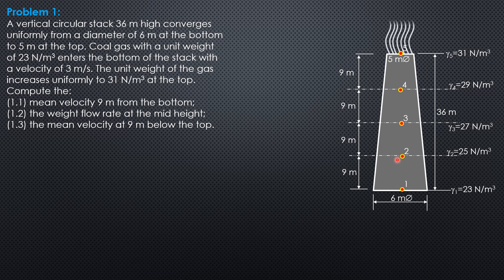The diameter at section 2 should be 5.75 meters, since the total change from 6 to 5 is 1 meter divided by 4 increments, giving 0.25 meters per section. The diameter at the mid-section is 5.5 meters, and 9 meters below the top the diameter is 5.25 meters, confirming that the top is 5 meters.